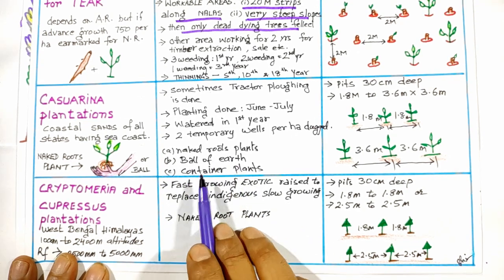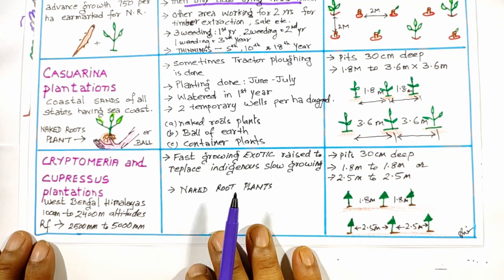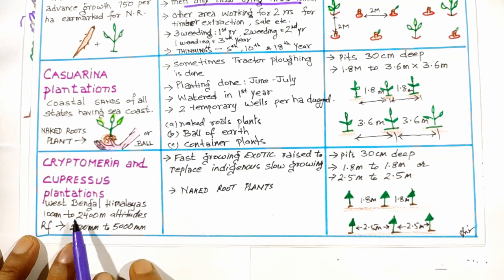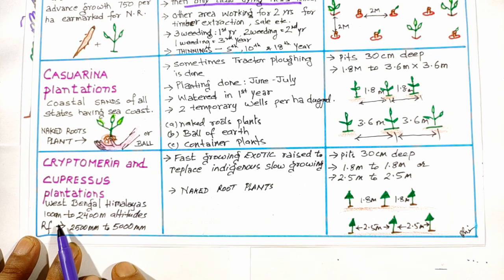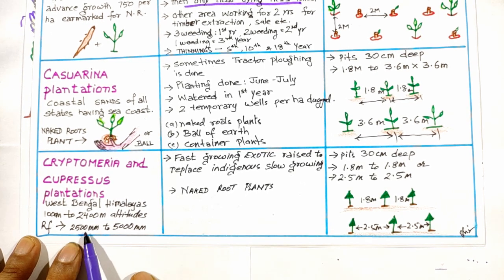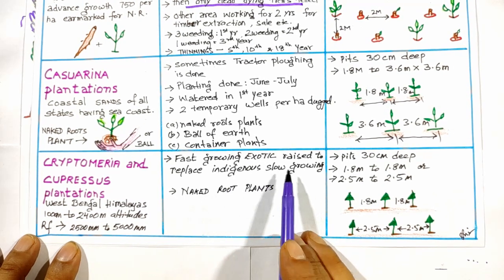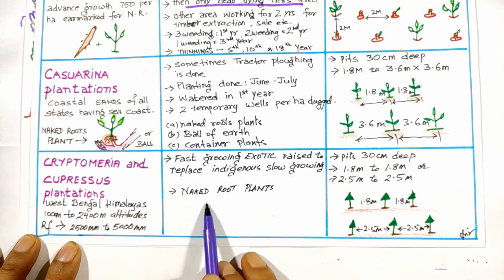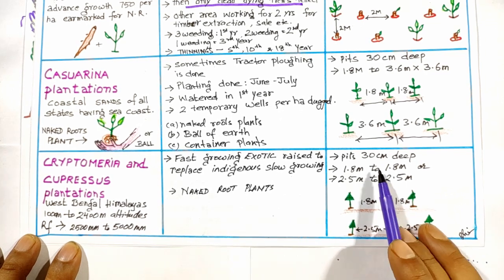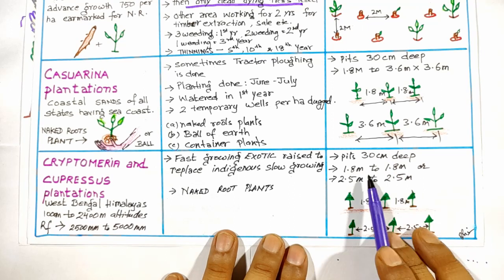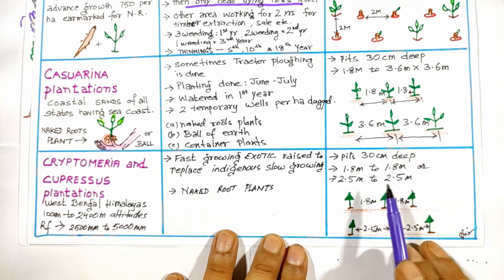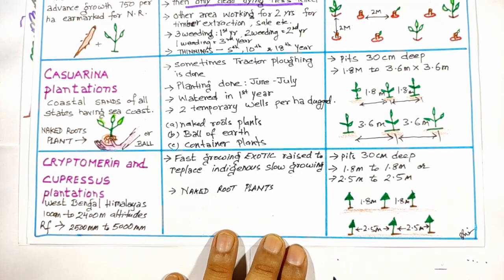Cryptomeria and Cupressus plantation is done in West Bengal Himalayas at altitudes of 1,000–2,400 m MSL with rainfall of 2,500–5,000 mm. The objective was to grow fast-growing exotic trees to replace indigenous slow-growing ones. Naked root plants were preferred, with 30 cm deep pits at 1.8m × 1.8m or 2.5m × 2.5m spacing.